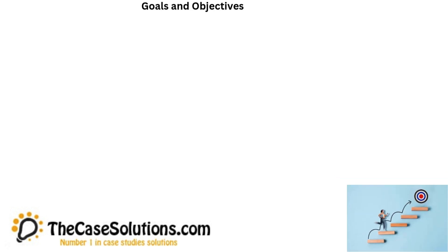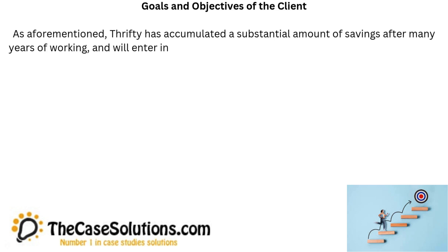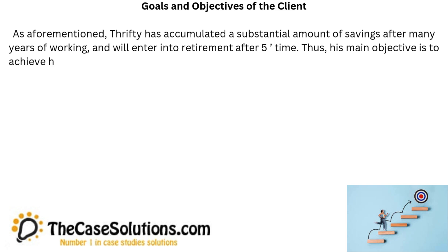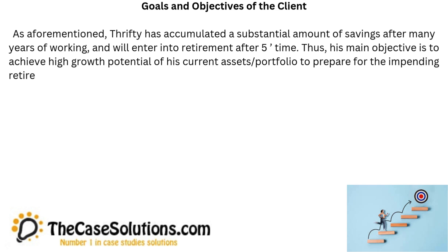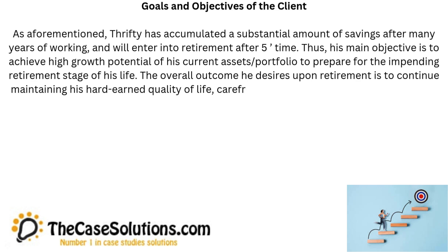As aforementioned, Thrifty has accumulated a substantial amount of savings after many years of working and will enter into retirement after five years. Thus, his main objective is to achieve high growth potential of his current portfolio to prepare for the impending retirement stage of his life. The overall outcome he desires upon retirement is to continue maintaining his hard-earned quality of life, carefree lifestyle, and financial freedom.